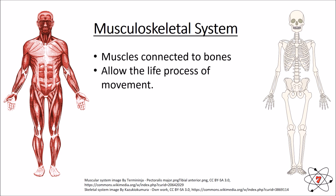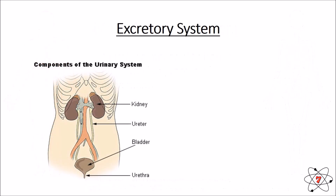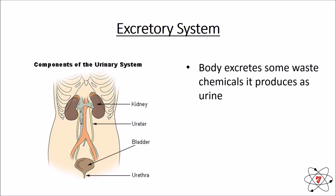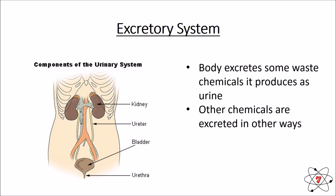The excretory system gets rid of waste that our body has made. Chemicals such as urine are removed from our blood through our kidneys. The urine gets stored in our bladder before being removed from our body through the urethra.